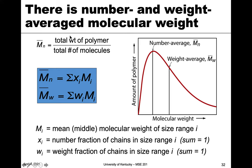For the number average, we take the total weight of the polymer divided by the total number of molecules, and we typically do this by bins. This gives us two options for averaging. By definition, the number-averaged molecular weight is a smaller number than the weight-averaged molecular weight, as you can see on this plot.